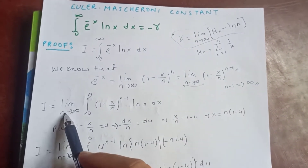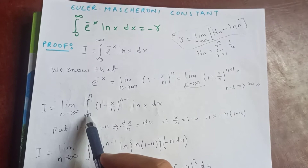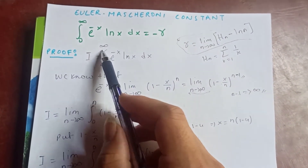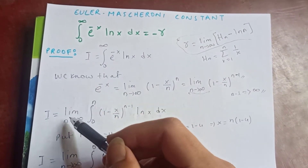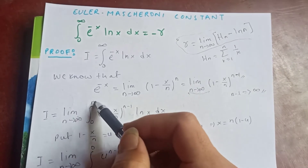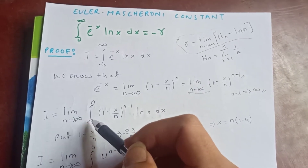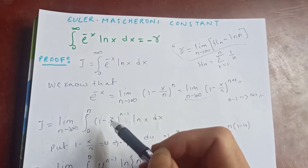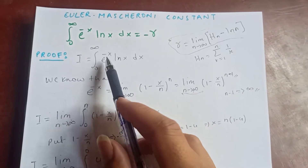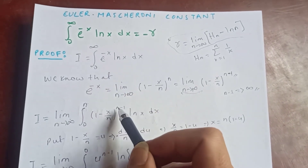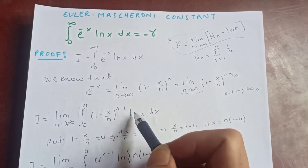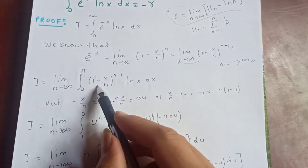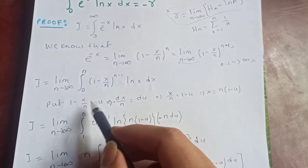As n → ∞ the upper limit of integration becomes n, so I = lim_{n→∞} ∫₀ⁿ (1 - x/n)^(n-1) log(x) dx.